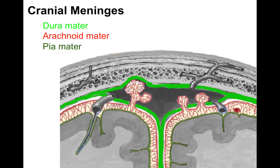Going deeper from the skull, we have the meninges — dura mater, arachnoid mater, and pia mater. They're like the seat belt of a car, protecting the brain from hitting the inside of the skull during impact. In the illustration, dura mater is lime green, arachnoid mater is reddish rose, and pia mater is the darker green below.